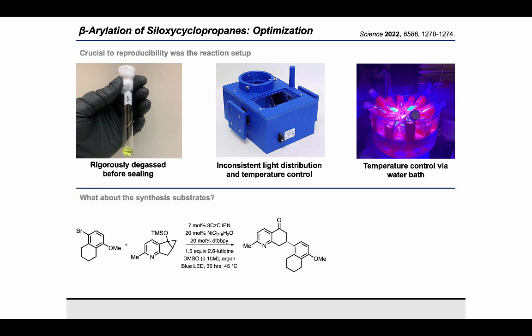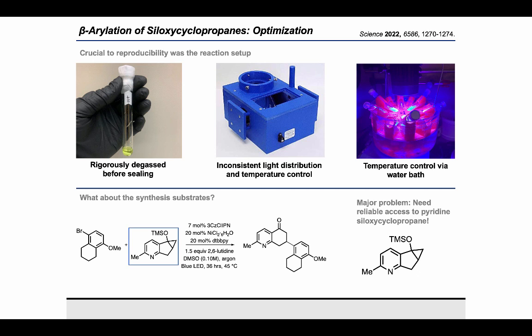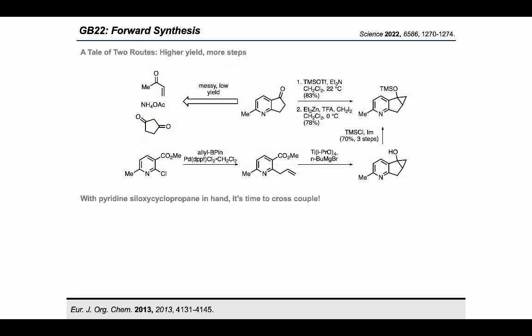Now that we had a reaction that was both high yielding and reproducible, it was time to revisit the synthesis substrates. Unfortunately, we still had a major problem—the required pyridine siloxycyclopropane was extremely difficult to access. While we were initially excited that the pyridine we needed was commercial or just one step from commercial, the one step from commercial was far from perfect. The initial route began with a condensation reaction combining methyl vinyl ketone, ammonium acetate, and cyclopentanone. Although the product is technically commercial, it was cheaper to make it ourselves. In our hands, however, this reaction only gave 10–20% yield of product contaminated with a minor regioisomer, which made purification difficult. This was followed by silyl enol ether synthesis by TMS triflate and triethylamine, followed by the Shi modification of the Simmons-Smith reaction. It was difficult to get gram quantities of the required pyridine with this method.